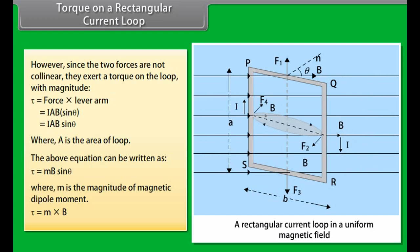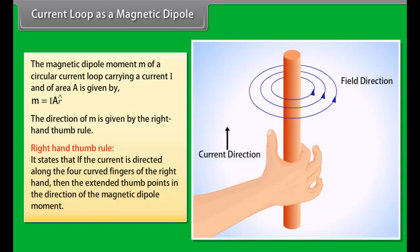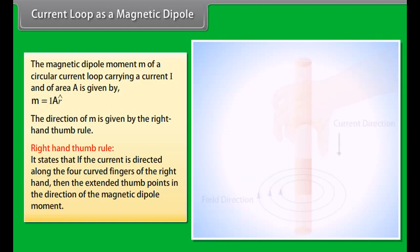Where M is the magnitude of the magnetic dipole moment, and Tau equals the cross product of M and B. The magnetic dipole moment M of a circular current loop carrying current I and area A is given by M = I × A × R-cap. The direction of M is given by the right hand thumb rule: if the current is directed along the four curved fingers of the right hand, the extended thumb points in the direction of the magnetic dipole moment.